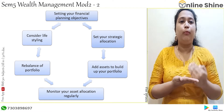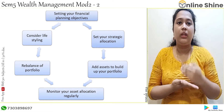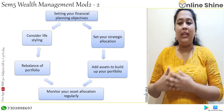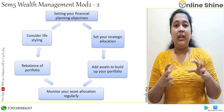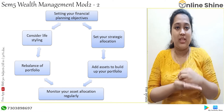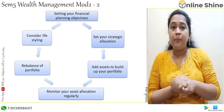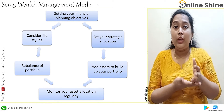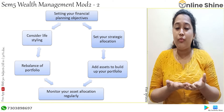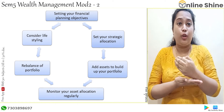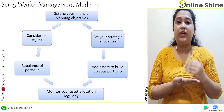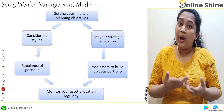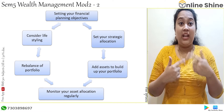The next step is rebalancing of portfolio. In case the equity portion — say I invested 50% in equity — outperforms compared to commodities, I will rebalance my portfolio. For example, I will now invest 60% in equity, 20% in bonds, and 20% in commodity. So I rebalanced my portfolio in order to get more returns and achieve my objective.